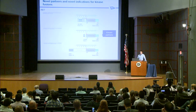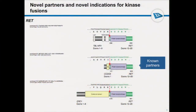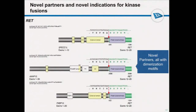Looking at RET, we were able to describe novel indications. These plots describe the putative protein sequence. Known partner genes CCDC6 and ERK1 are found in colorectal adenocarcinoma and breast cancer respectively — they contain the coiled-coil domain that causes RET to dimerize and auto-activate. We also found novel partners for RET fusions: they contain the kinase domain, and the partner gene contributes coiled-coil domains that cause RET to dimerize and auto-activate. These are all in serous carcinoma, and these are examples of the filters we apply to verify that these fusions are functional.